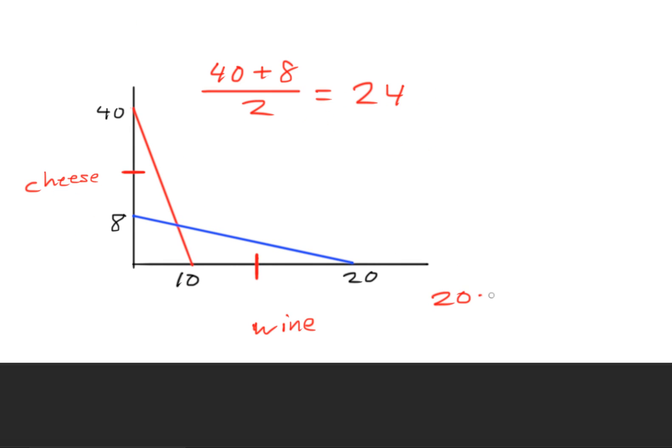Over here, we'll do 20 plus 10, divide that by 2, and we'll get 15 units of wine.